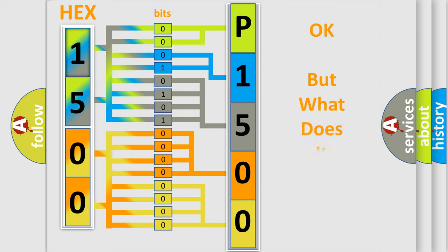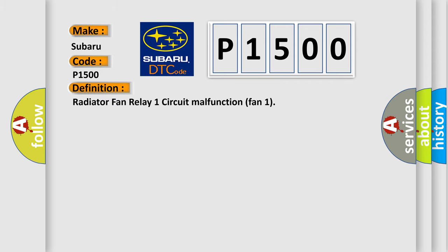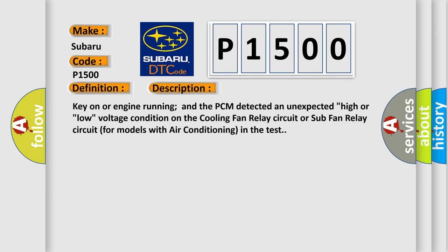The number itself does not make sense if we cannot assign information about what it actually expresses. So, what does the diagnostic trouble code P1500 interpret specifically for Subaru? The basic definition is: Radiator fan relay one circuit malfunction — fan one. Key on or engine running, and the PCM detected an unexpected high or low voltage condition on the cooling fan relay circuit or sub fan relay circuit, for models with air conditioning, in the test.